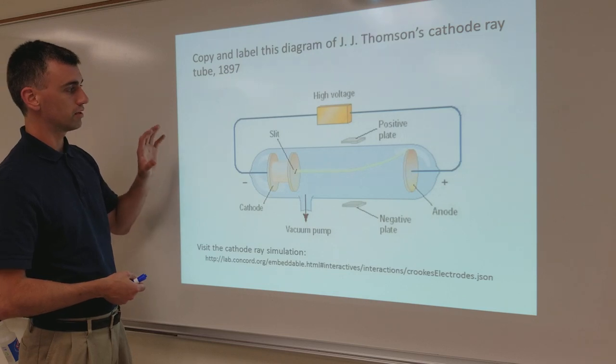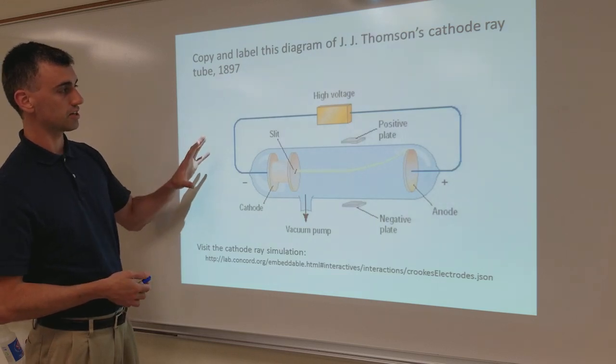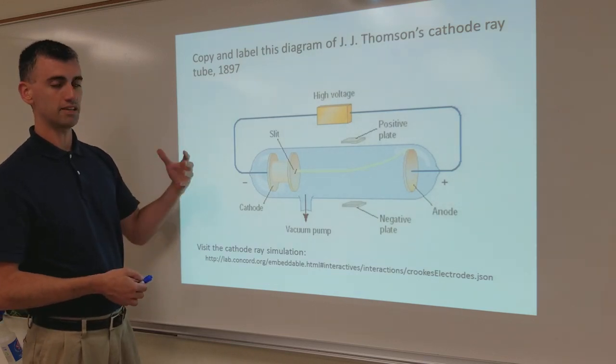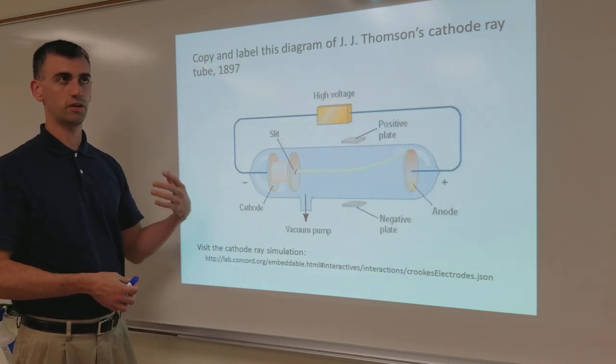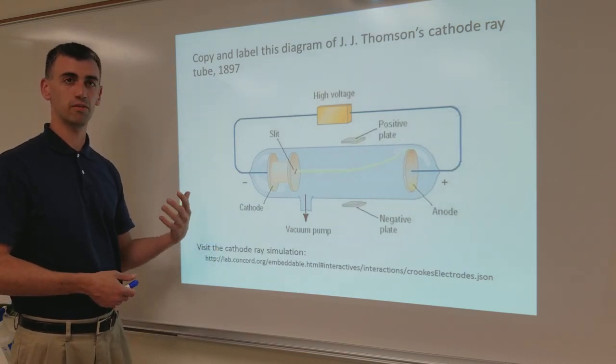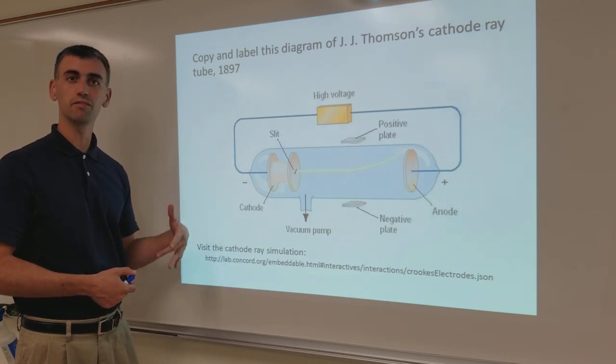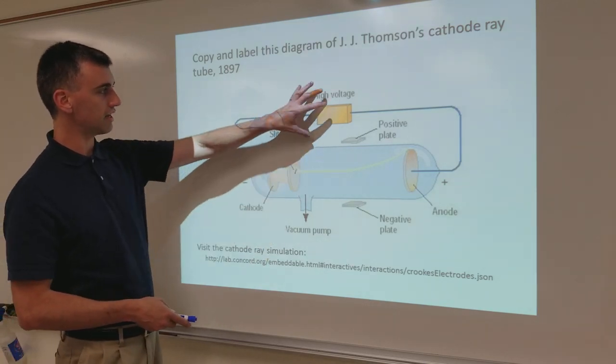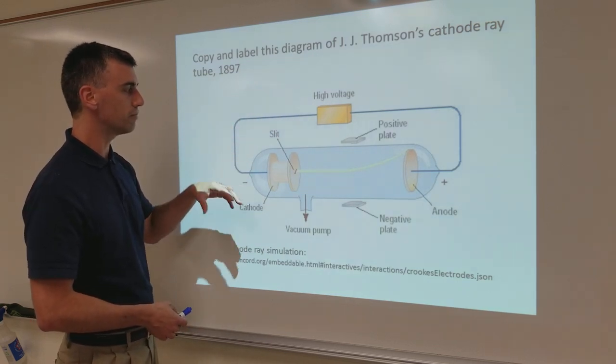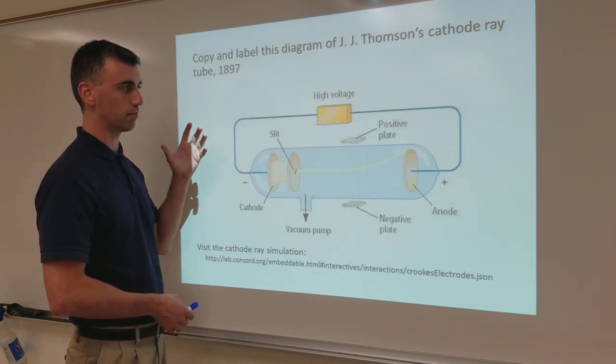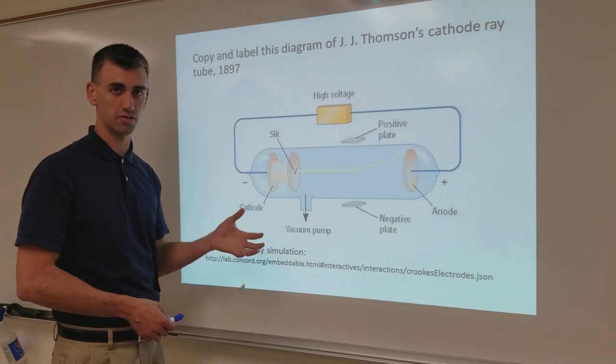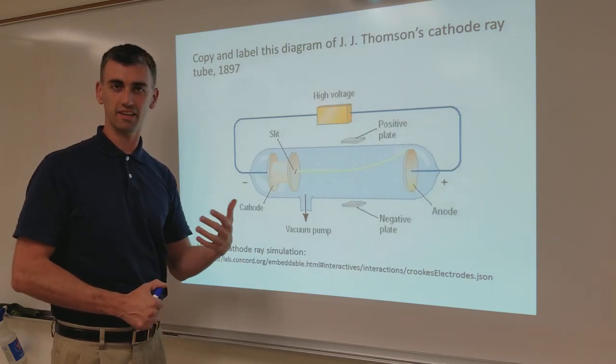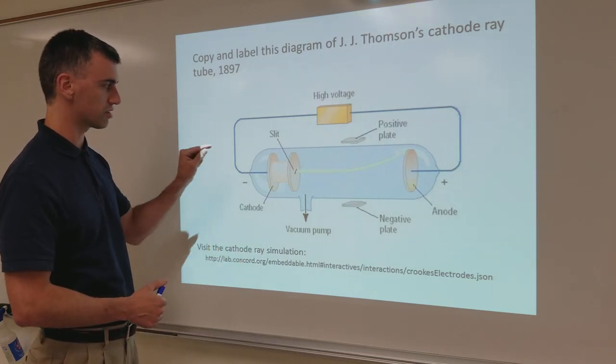So this guy, J.J. Thompson, had the idea that basically if you can split open an atom and get stuff from the inside of it to come out, you can find out what an atom is made of. Using high voltage electricity, you can basically bust parts of the atom out so that you can see them and detect their properties. And so that's what this was all about.